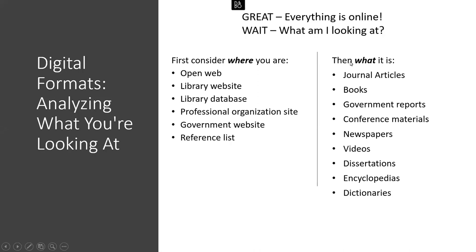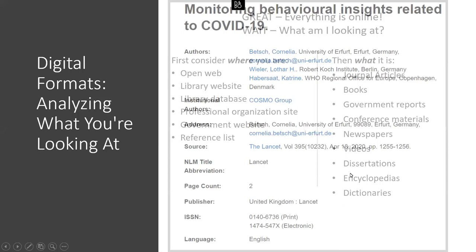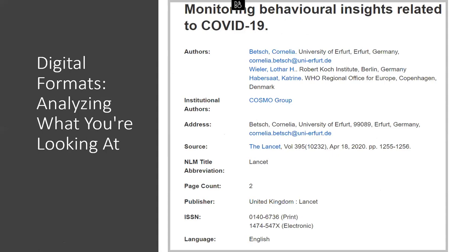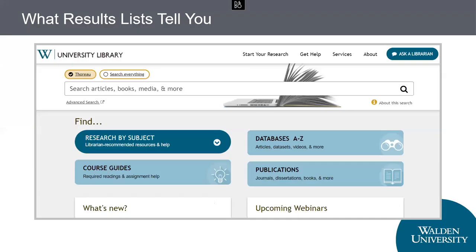What we're going to cover is the 'what' of journal articles, books, government reports, conference materials, newspapers, videos, dissertations, and encyclopedias and dictionaries. Basically, that's so that when you see something come up in a search in the library, you're going to be able to figure out what it is you're looking at.